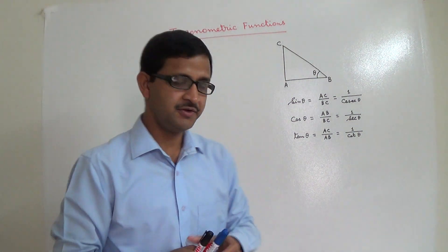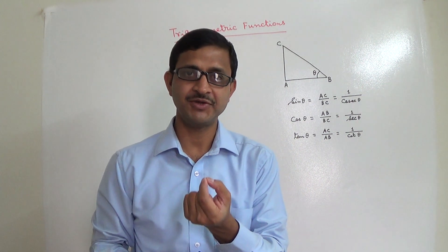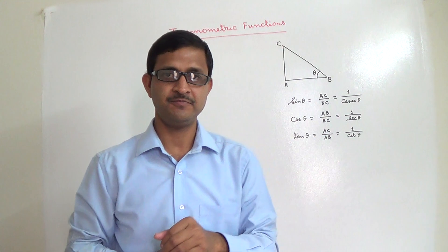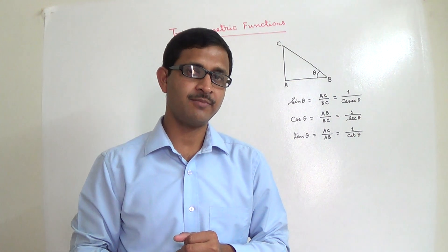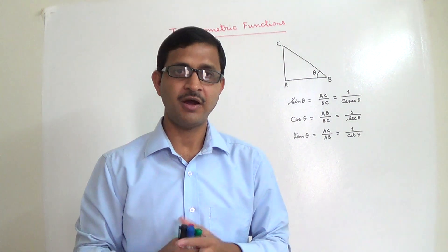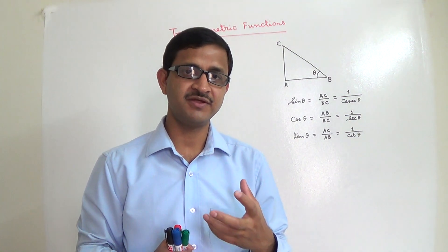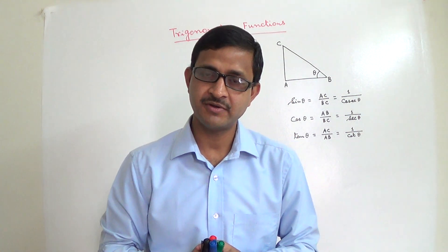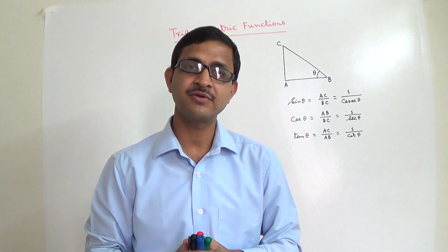In trigonometric ratios, the value of theta is always acute — that means it can only range from 0 degrees to 90 degrees. So if we have to measure the sine of an angle greater than 90 degrees, trigonometric ratios cannot help directly. That is why trigonometric functions come in — they are an extension of trigonometric ratios.